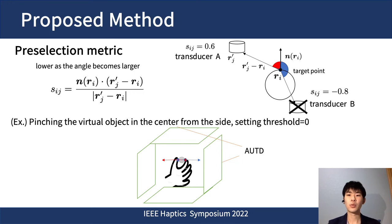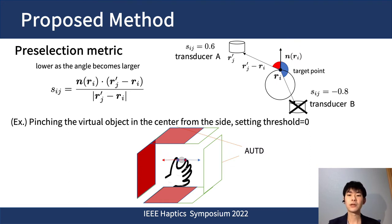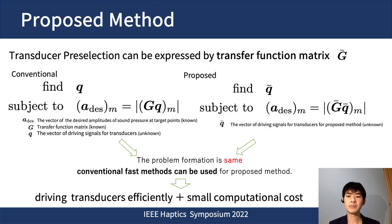For example, when pinching the virtual object in the center from the side and setting the threshold to 0, the left side transducers, shown in red, form the focal point on the index finger, and the right side, shown in blue, form the focal point on the thumb. Since the preselection can be represented by a transfunction matrix, the problem formulation is the same as before. So conventional fast methods can be used for the proposed method, and we can drive the transducers efficiently with small computational cost.